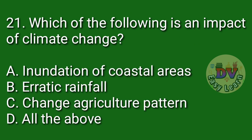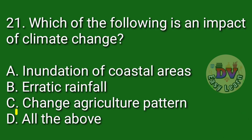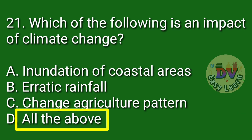Question number 21. Which of the following is an impact of climate change? Correct answer: All the above — including inundation of coastal areas, erratic rainfall, and change in agriculture pattern.